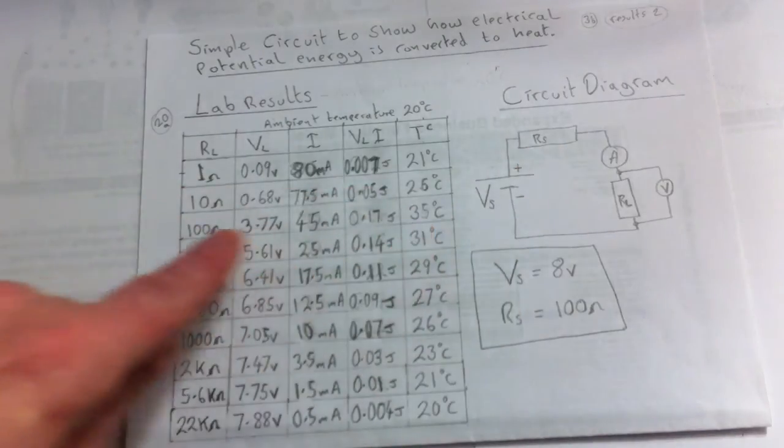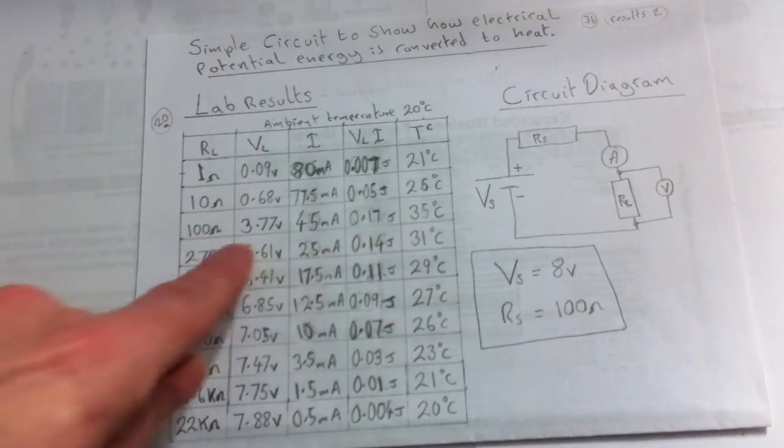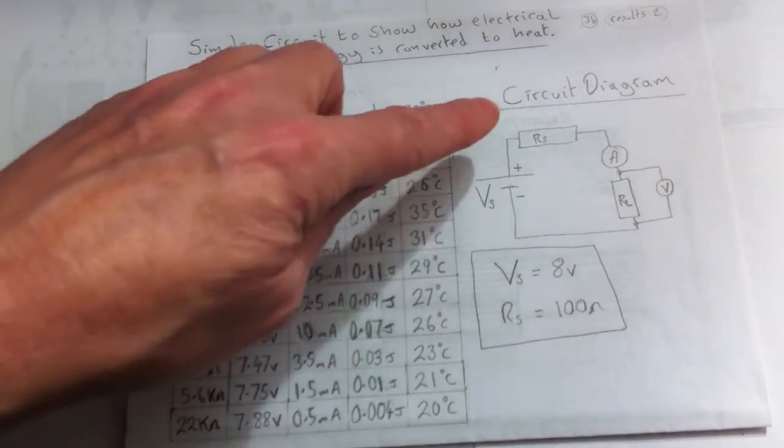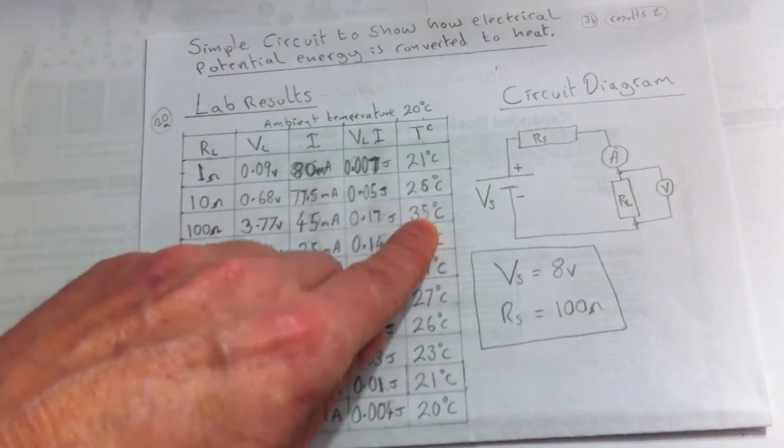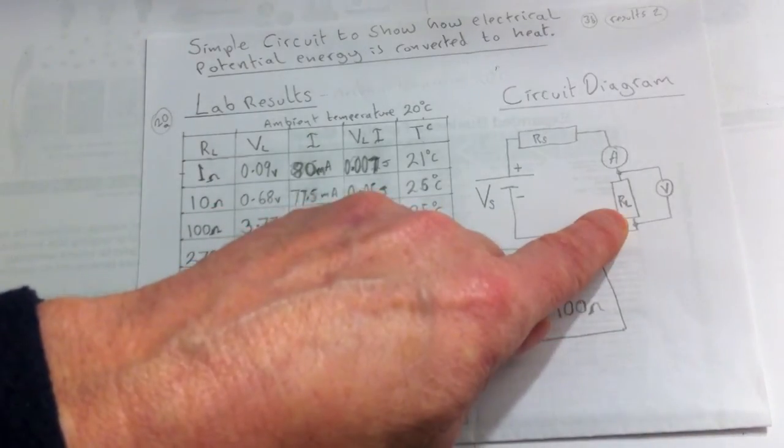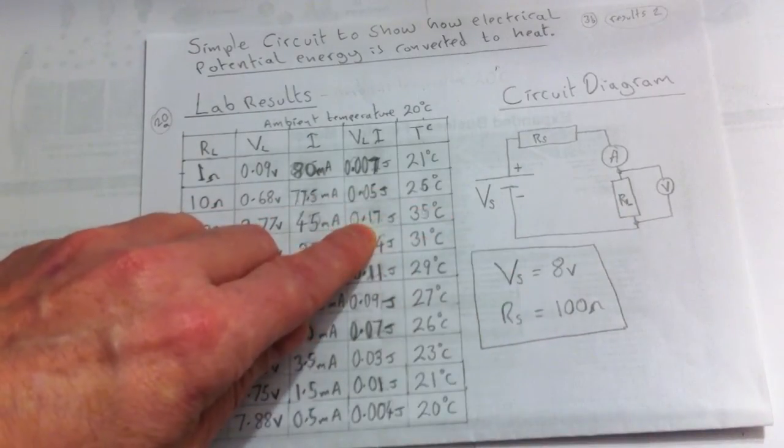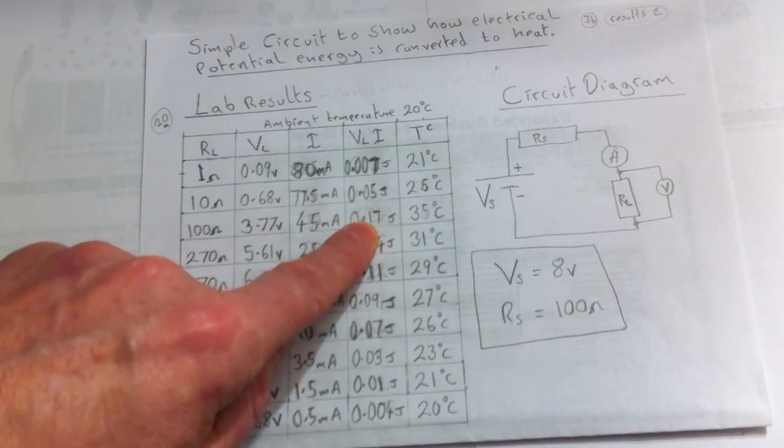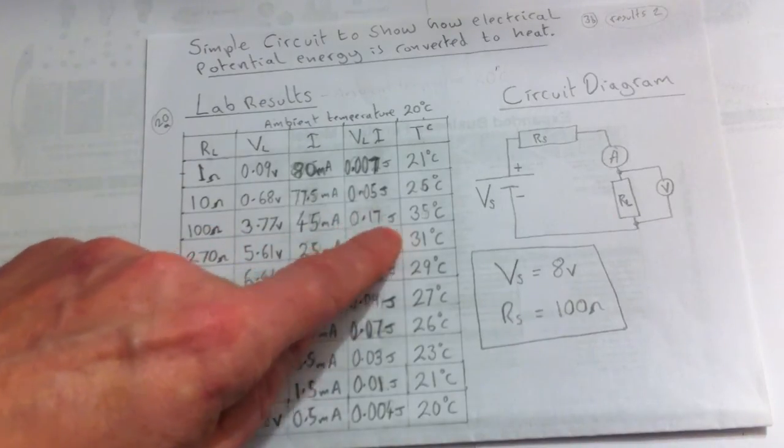This is actually showing here, even in the, you can see this even in the tabulated values, that the maximum energy, in other words, that's the maximum heat here that's being released by this resistor, which is obviously the maximum energy. And also, if we see the energy value here, that's 0.17 joules.